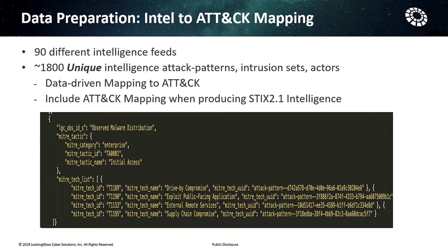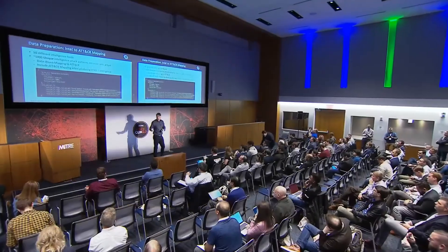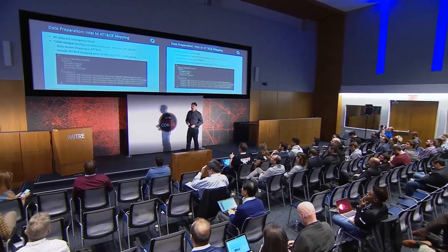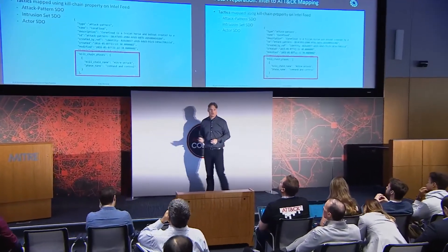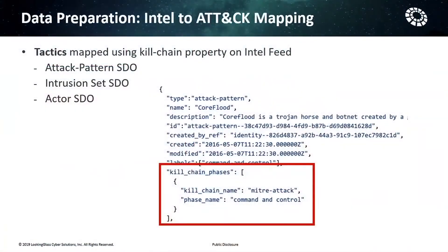What we did was come up with a simple JSON technique where we say for a particular attack pattern it maps to this tactic and these techniques. We wanted to correlate all the different intelligence we're receiving in STIX 2 back to MITRE so that when we report or create metrics, we know exactly which tactic and technique a particular piece of intelligence, when detected in the network, is being seen. This is an actual attack pattern in STIX 2 format. We mapped the tactic using the kill chain, exactly as MITRE ATT&CK does, and applied it to our STIX 2 intelligence objects — in this case, CoreFlood. We did that across the 1,800 different items using that data mapping technique.